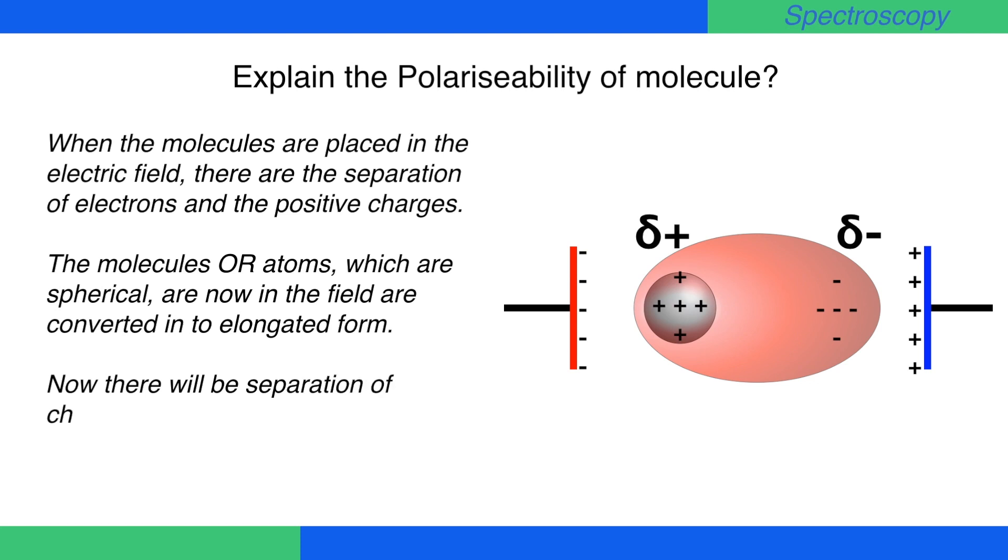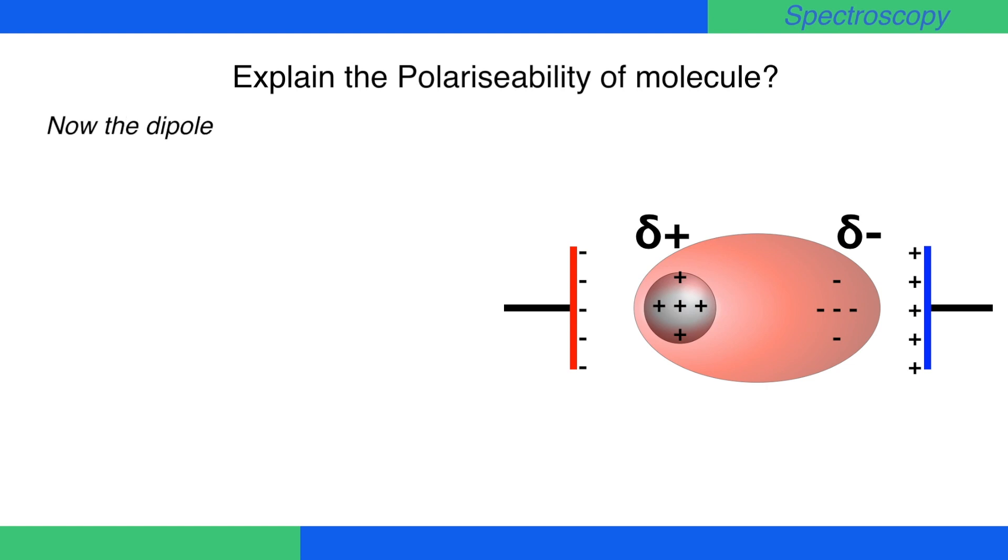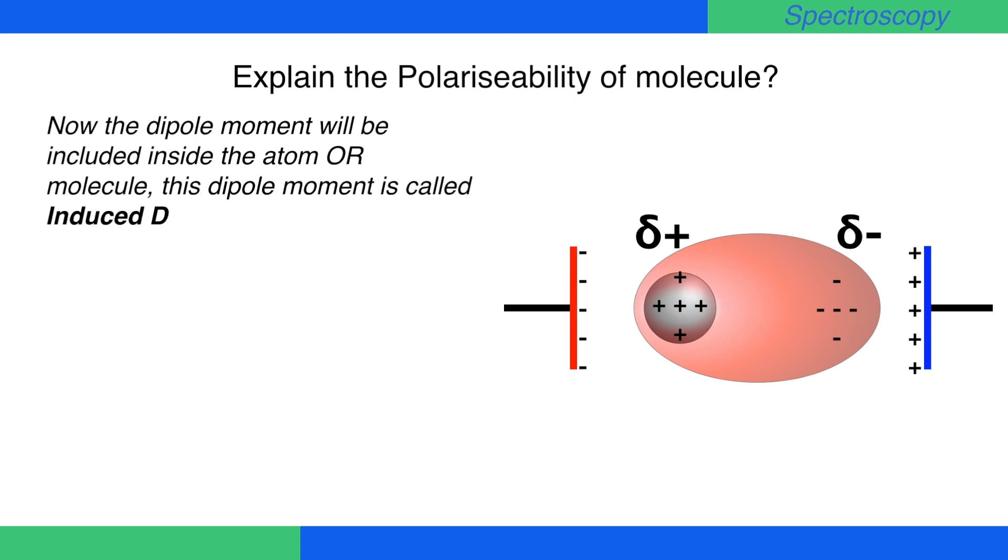Now there will be separation of charges and they are pointing towards the respective plates. The dipole moment will be generated inside the atom or molecule. This dipole moment is called induced dipole moment mu i.